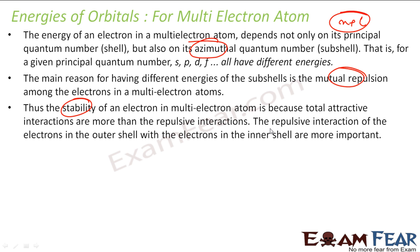The stability of the electron in the multi-electron atom is because the total attractive interaction is more than the repulsive interaction. There are repulsive interactions between electrons and also attraction from the positive nucleus. All these forces combine such that attraction is more than repulsion, and that gives the final stability of an electron.